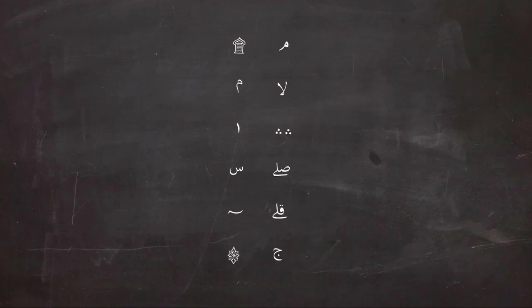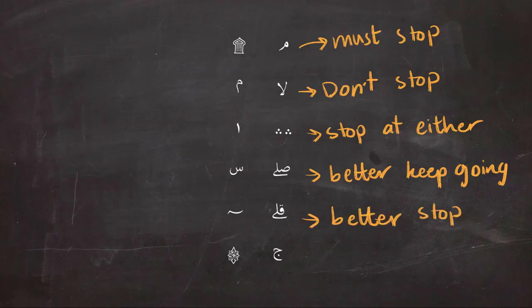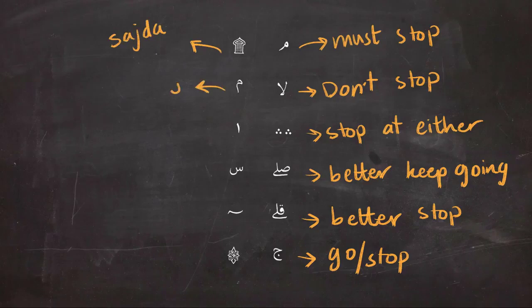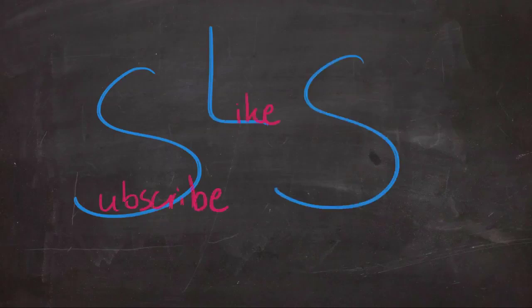So these were the 12 signs that you are going to see in the Quran, and here I'm going to give a quick summary of what these signs mean. Try to remember them, and of course the best way to learn them is by reading a lot of Quran, because practice makes perfect. So this, ladies and gentlemen, is going to be the end of today's lesson. I hope you've learned anything new today. If you did, like and share the video for other people to learn from it, and I'll see you next lesson.